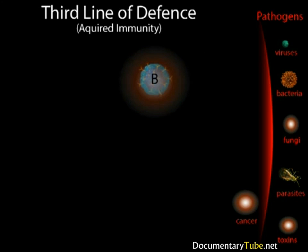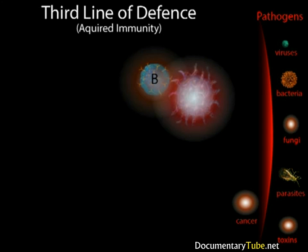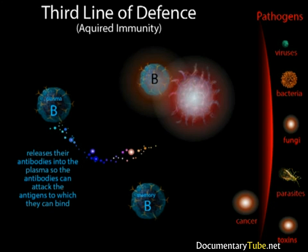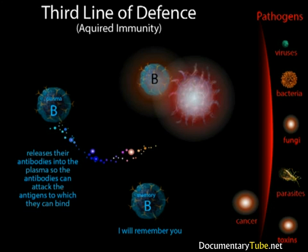Antibodies are produced by B cells, which are specialized lymphocytes. Like all blood cells, these lymphocytes are formed from stem cells in the bone marrow. They are formed with antigen binding sites on their plasma membranes. When exposed for the first time to the antigen for which they are specific, these sites bind to the antigen and the B cells begin to proliferate. The proliferation produces two types of B cells. Plasma B cells release their antibodies into the plasma so that the antibodies can attack the antigen. After the infection, most B cells die. But memory B cells are long-lived B cells that do not release their antibodies; instead, they circulate in the body waiting for the next attack by the antigen, allowing the body to respond quickly to any subsequent infection.